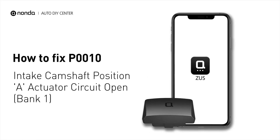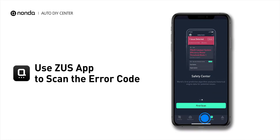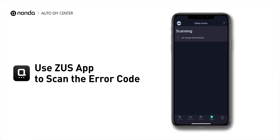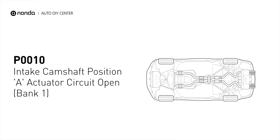If you are getting a P0010 error code, this video is going to show you two practical solutions to fix the error code at home. Use the Zeus app to scan your vehicle and see the error code P0010. It indicates an issue with the ECM detecting a variation in the mechanical timing between the crankshaft and bank 1 camshaft.